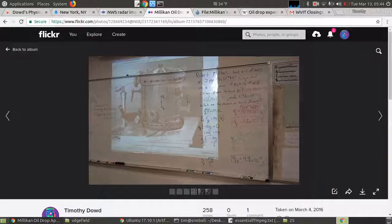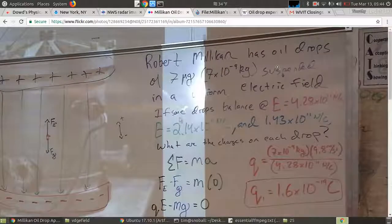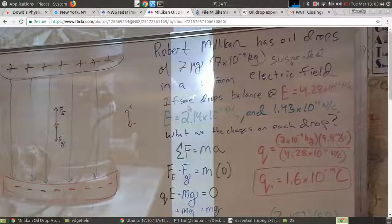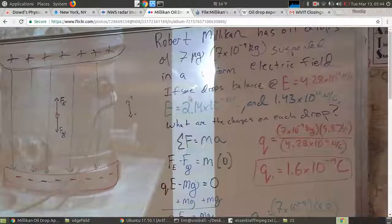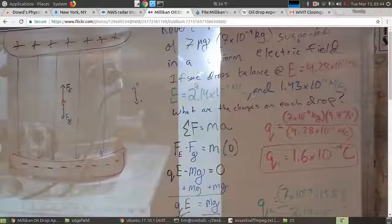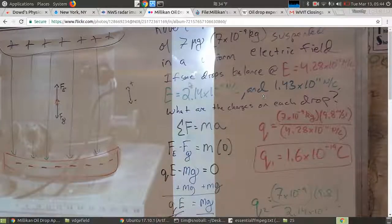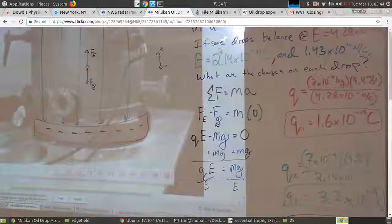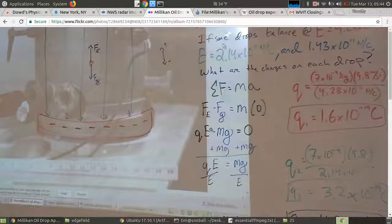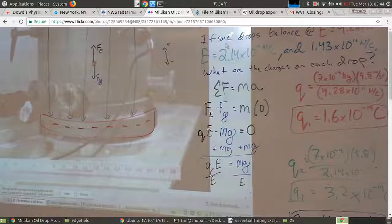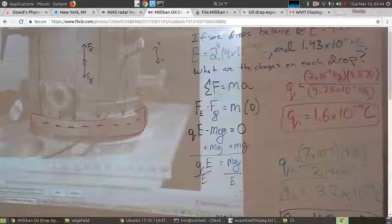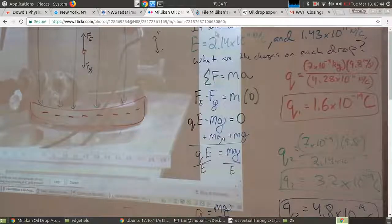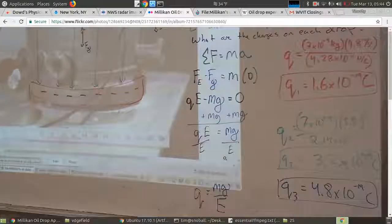So let's look at this simplified problem. If Millikan has oil drops of a certain mass, which he found out through other experiments, and he put them in an electric field and saw that they balanced and didn't go down or up at the following electric field values, the question is what are the charges on each drop? So it's just sigma f equals ma, we have an upward fe, a downward fg, and we plug in our new equation for electric force, the charge times the electric field. We then subtract our gravitational force, which actually is the same equation, but for gravity, the mass times the gravitational field. And we end up with an equation that lets us solve for charge.